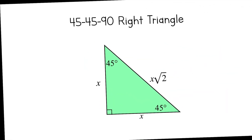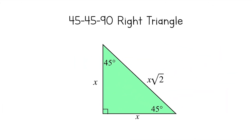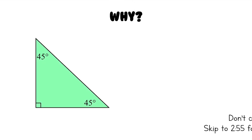Let's start with the 45-45-90 right triangle. It has two angles that are both 45 degrees, and the two leg lengths are the same. The hypotenuse of a 45-45-90 right triangle is always the leg length times the square root of two. And why does this work? Let's take a look at this right triangle right here. This is a 45-45-90 right triangle, and let's call this leg X.